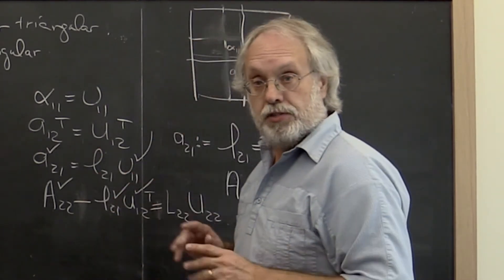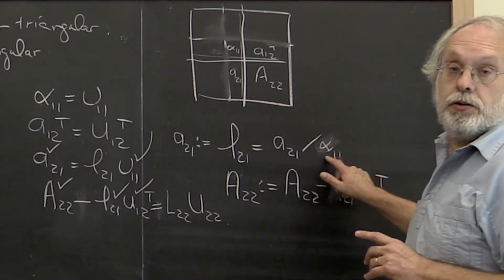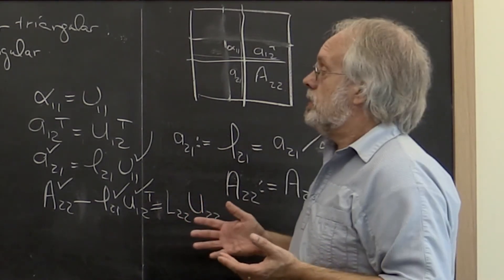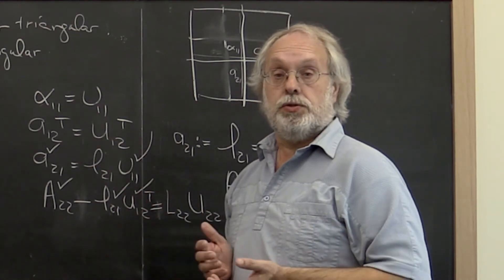But something interesting comes up along the way. What if we divide by zero? In other words, what if the diagonal element that shows up along the way is ever equal to zero?